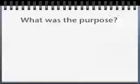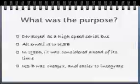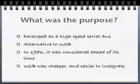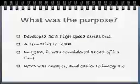At the time of development, engineers were seeking a faster alternative to USB. Firewire was transferring information at up to 30 times the speed of USB. In 1986, it was so fast it was considered ahead of its time, and release was delayed until 1995. USB was initially easier to integrate and less expensive.